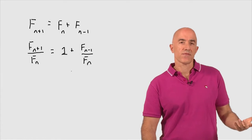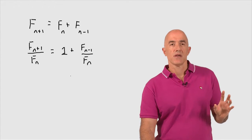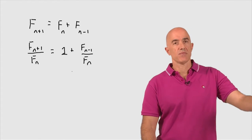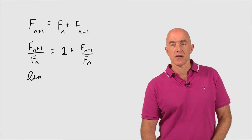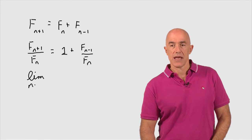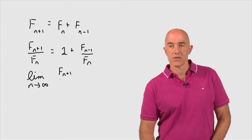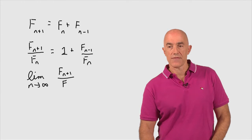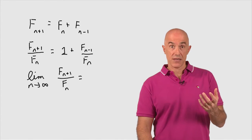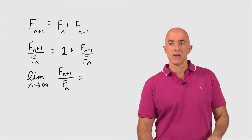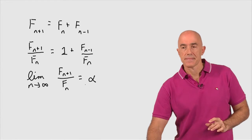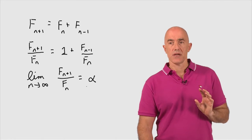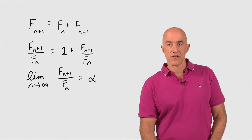This equation by itself is difficult to solve, but we can look at the limit of this equation when n becomes large — when n goes to infinity. What we need to do is make an assumption that the limit, as n goes to infinity, of the ratio of two consecutive Fibonacci numbers F_{n+1} over F_n exists. We can call that limit alpha.